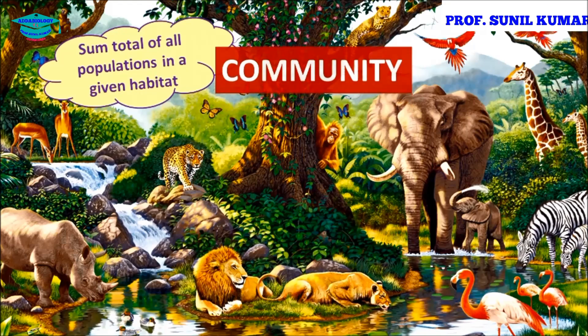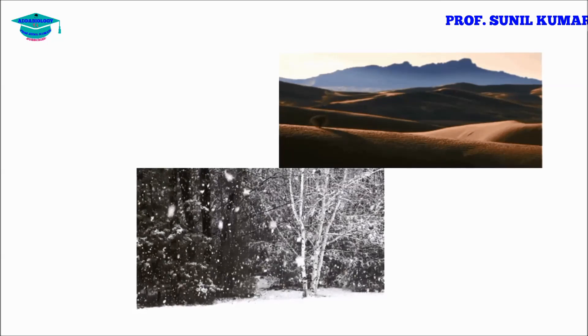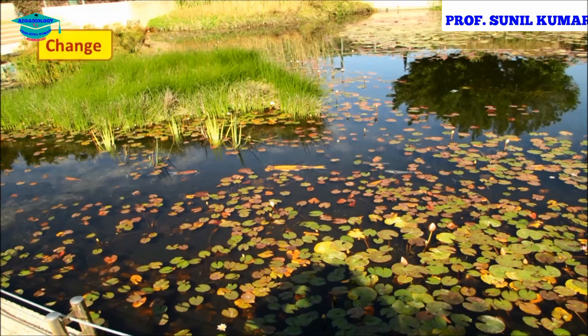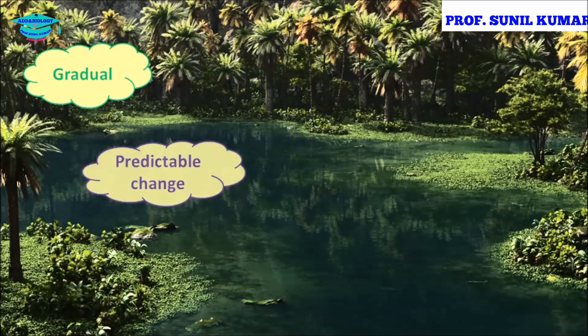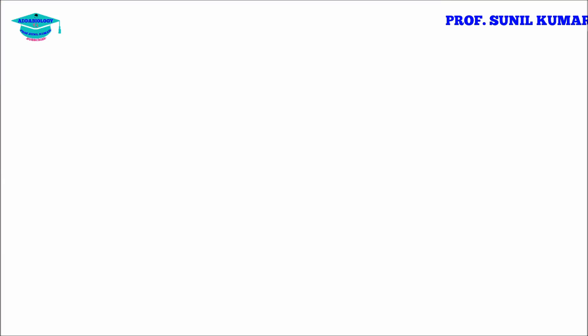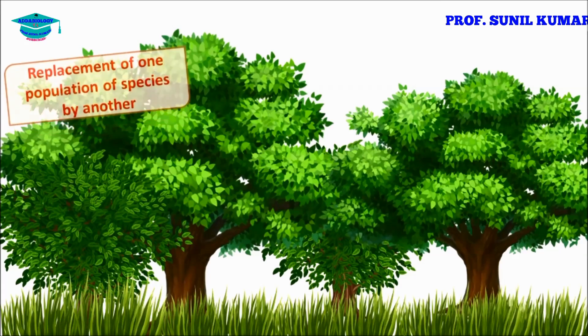The sum total of all populations in a given habitat is called a community. Ecological succession refers to the gradual, predictable change in species composition in a given area. Plants can exist in various forms and adapt to changing environments in a sequential, definite order that leads finally to a climax community — such as a grassland getting converted into a big forest. This replacement of one population by another is ecological succession.